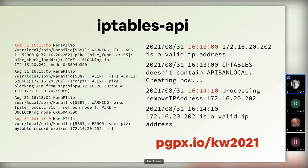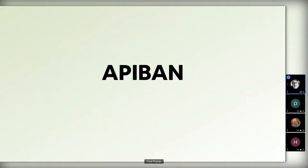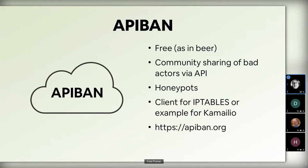The last part I wanted to discuss is API Ban — a free service from lod. Free as in beer. It's a community sharing of bad actors via API. We have honeypots throughout the world. Narco manages a lot of them and has a project reviewing the data from this honeypot collection — you can see user agents and things that are attacking you. This client for iptables in Go will automatically get IPs that should be blocked and block them in iptables.